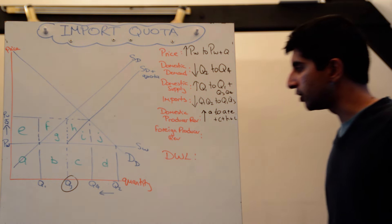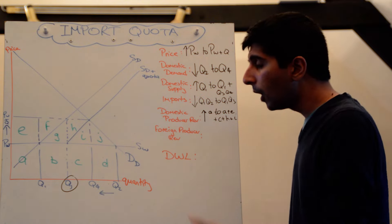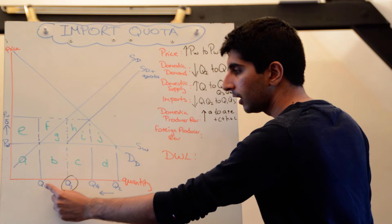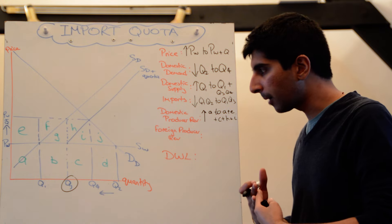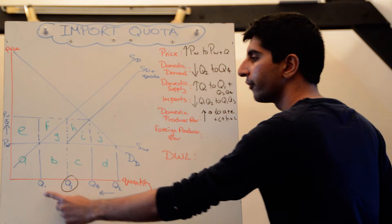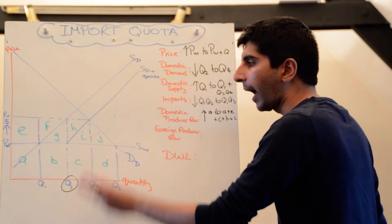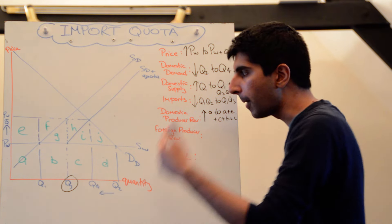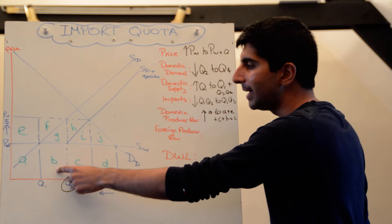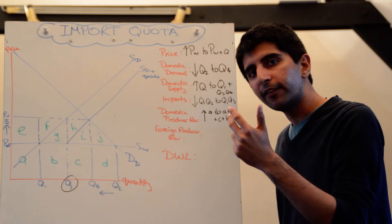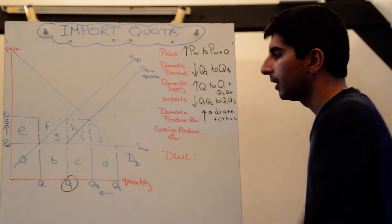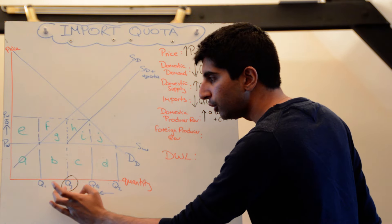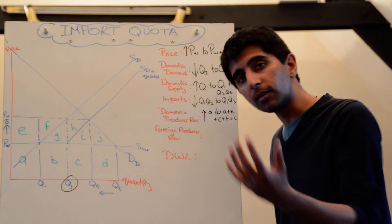What about foreign producer revenue? Well, before they were importing, they were actually selling, but domestically there were imports coming in from these foreign producers of Q1, Q2, and they were coming at the price of Pw. So before the quota, B, C and D represented the foreign producer revenue. But now, what's happened? They're only importing Q1, Q3, but they're getting a higher price than Pw plus quota.